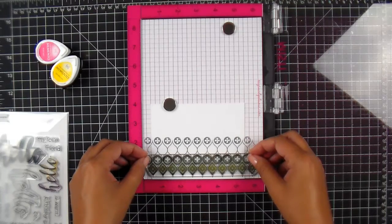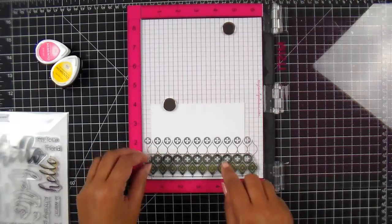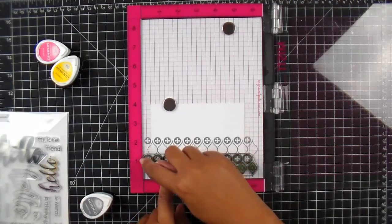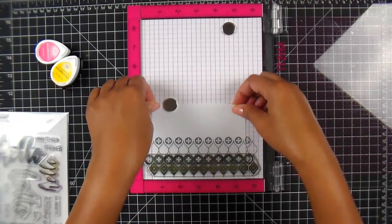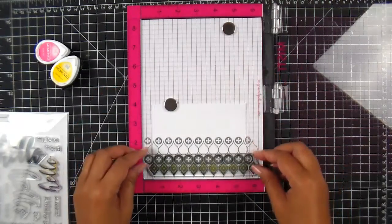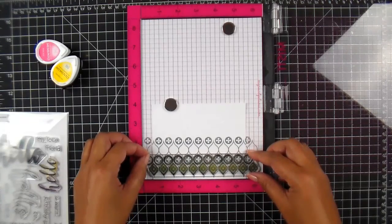Actually, I think it needs to go over just a tad bit more. All right, now with that being said, it's going to hang up on my MISTI a little bit, so I'm going to use my grid line to move it over just a little bit so I can get my stamp to rest perfectly.